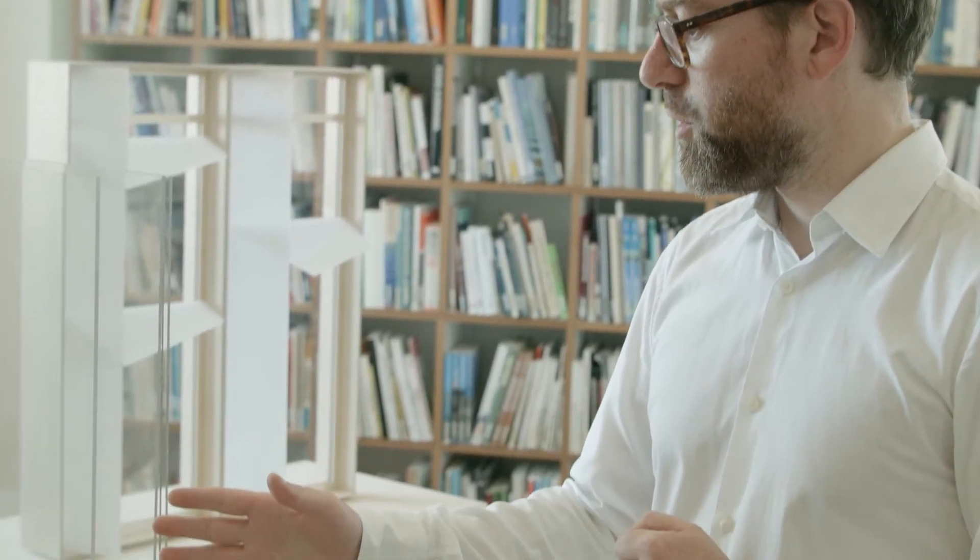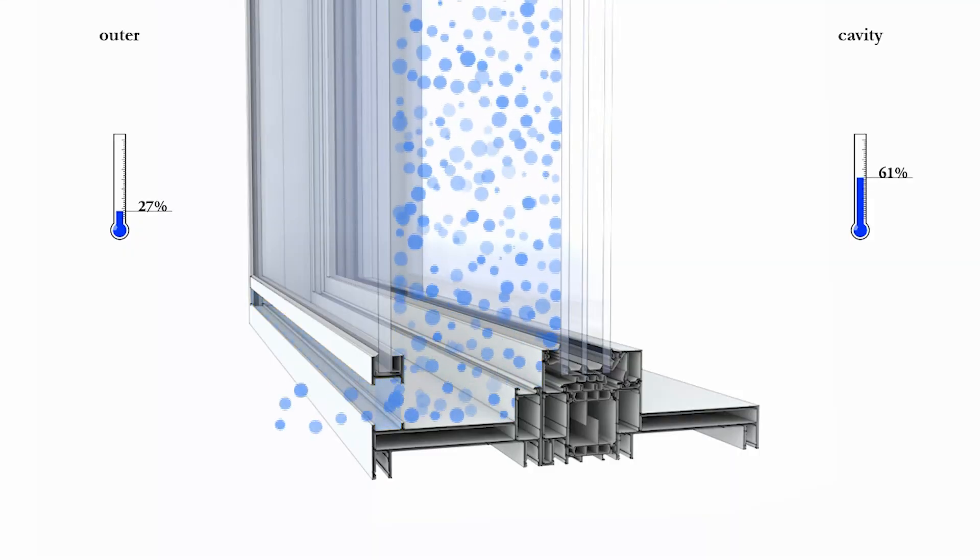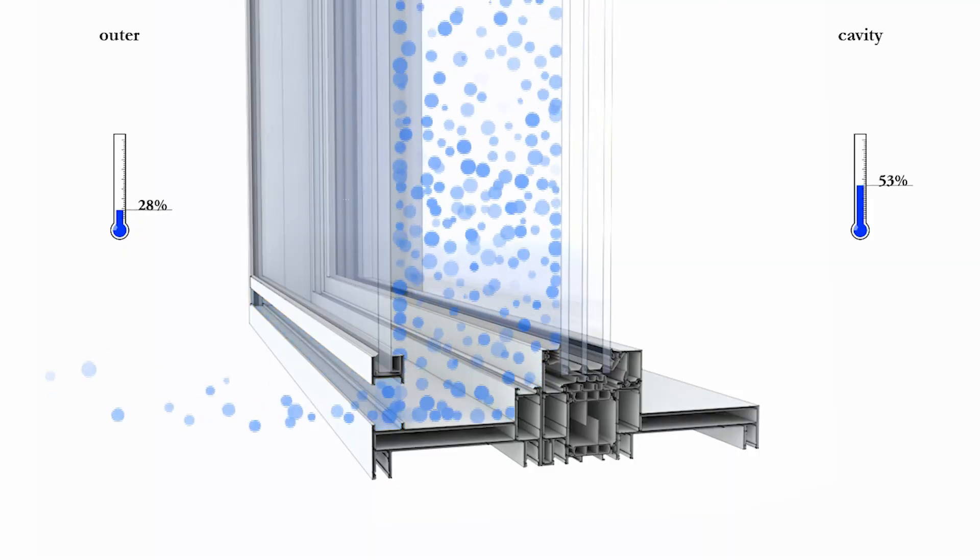This is a model of an auto-reactive facade unit that regulates relative humidity. It prevents this outer skin from condensation.